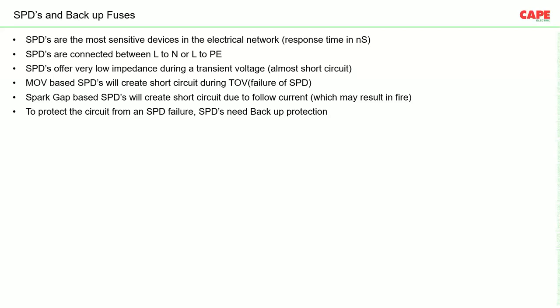MOV-based SPDs will create a short circuit during TOV. A normal SPD may have a maximum continuous operating withstand capability of, say, 300 V. If it experiences a temporary overvoltage of 440 V — due to neutral cut or similar — and this condition is prolonged, the SPD can fail and create a short circuit. In sparkgap-based SPDs, a short circuit can also be created due to follow current, which can result in fire.